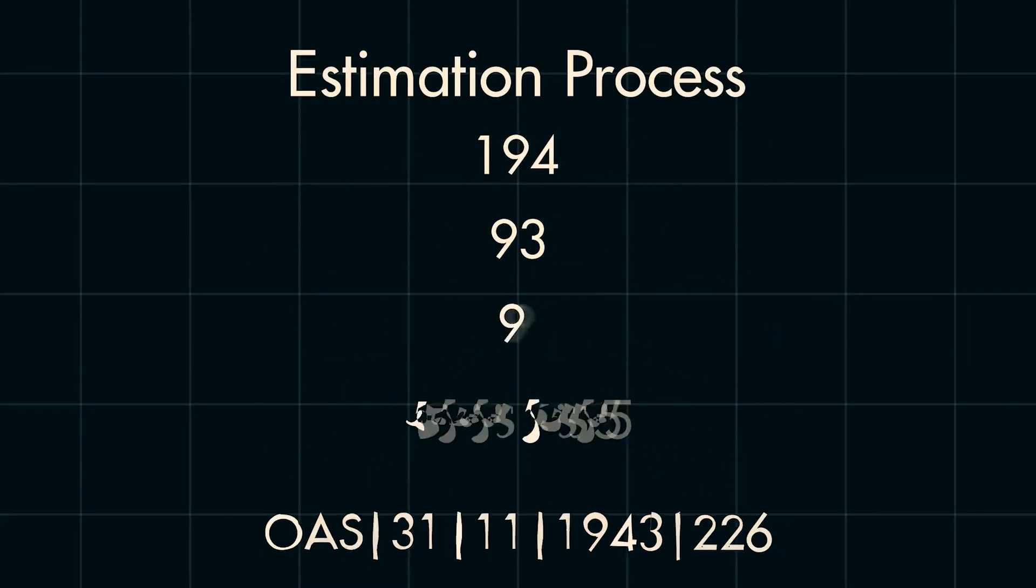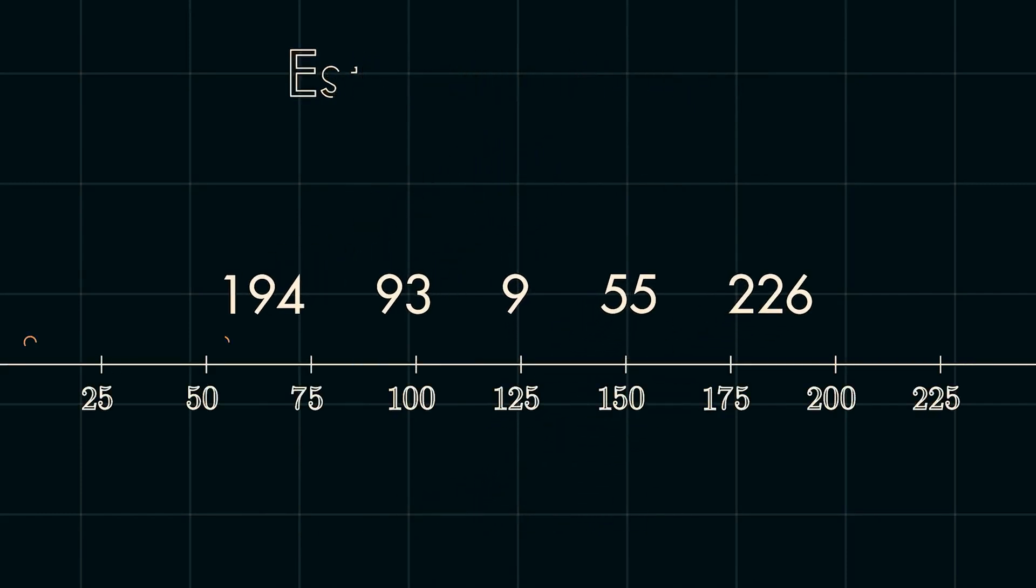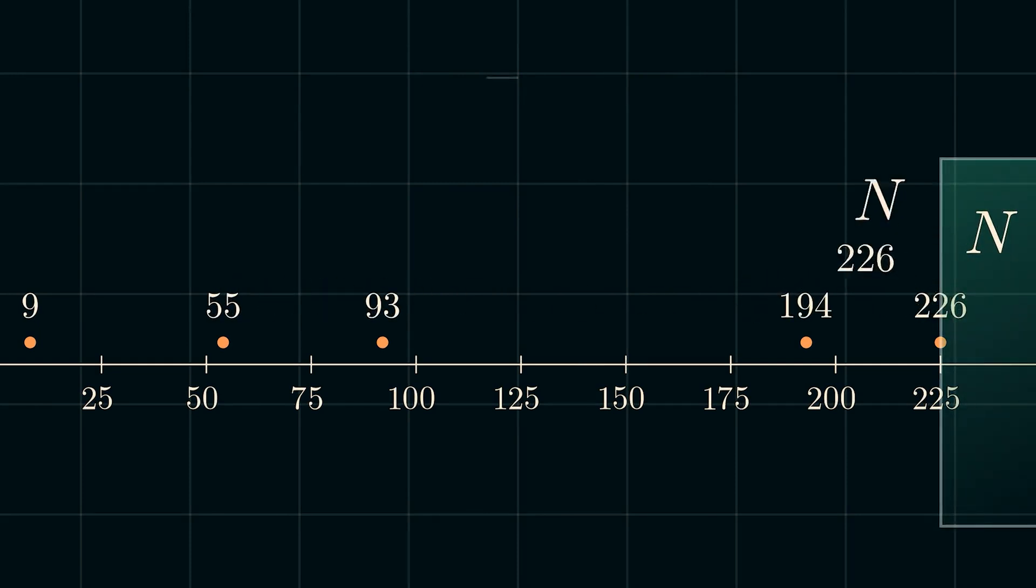First, there are at least 226 tanks because this is the highest number in the sample. From here, focus shifts to estimating how much larger we should expect the actual number of tanks to be. This can be done by thinking about how large the gap would be between 226, the actual largest number, which again we'll call n.